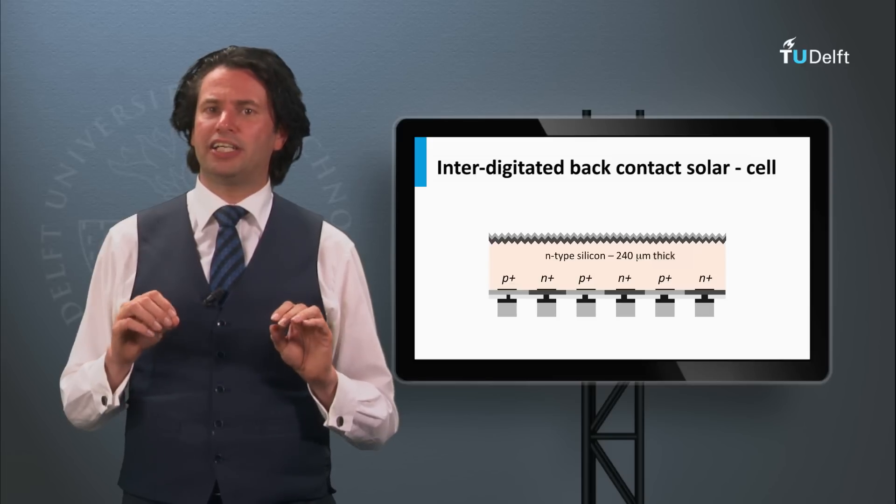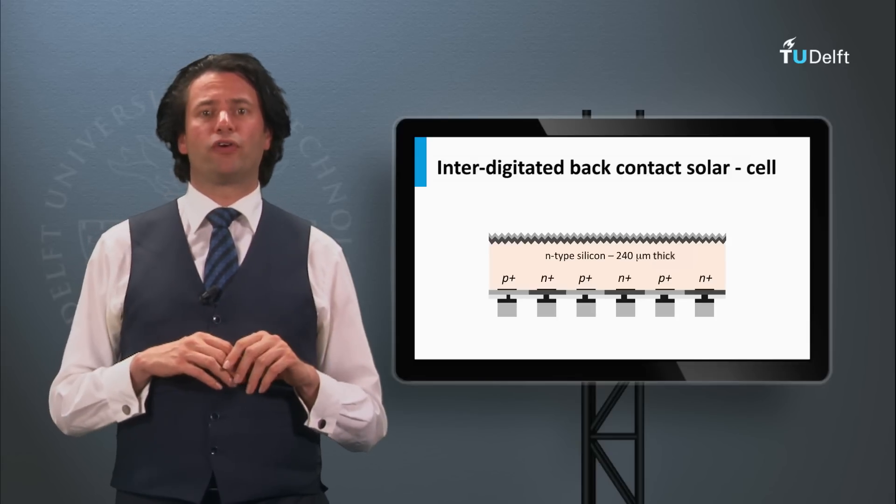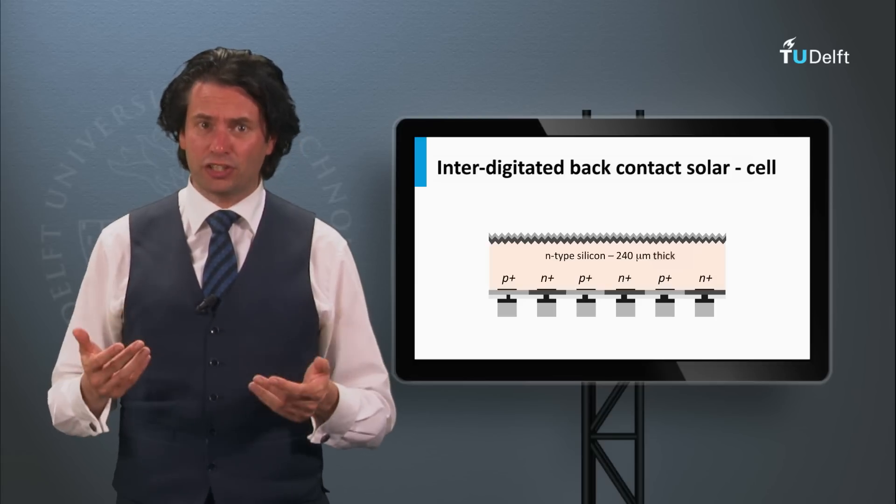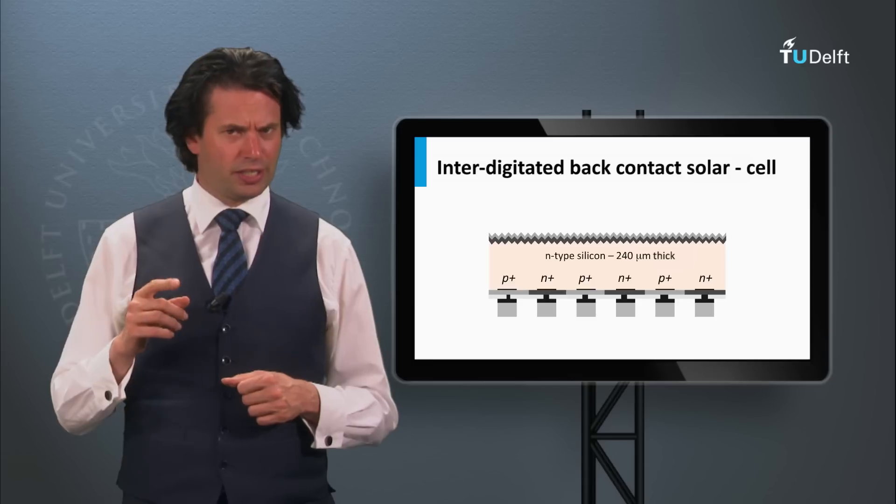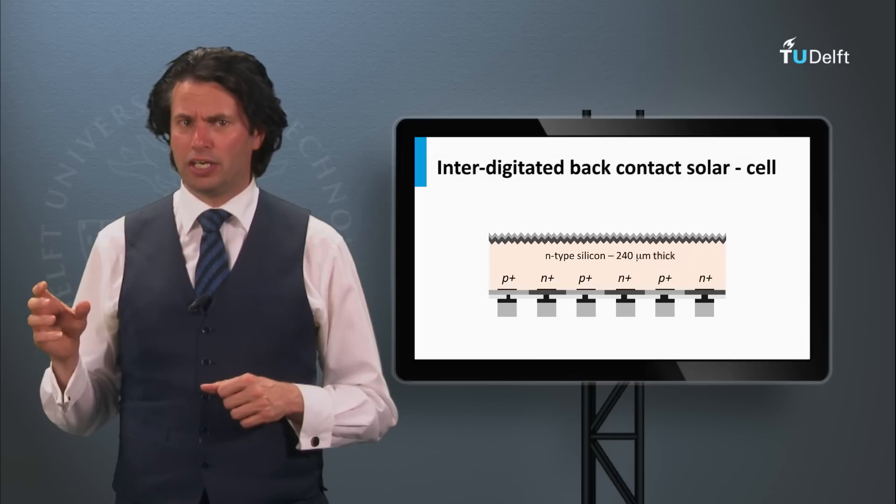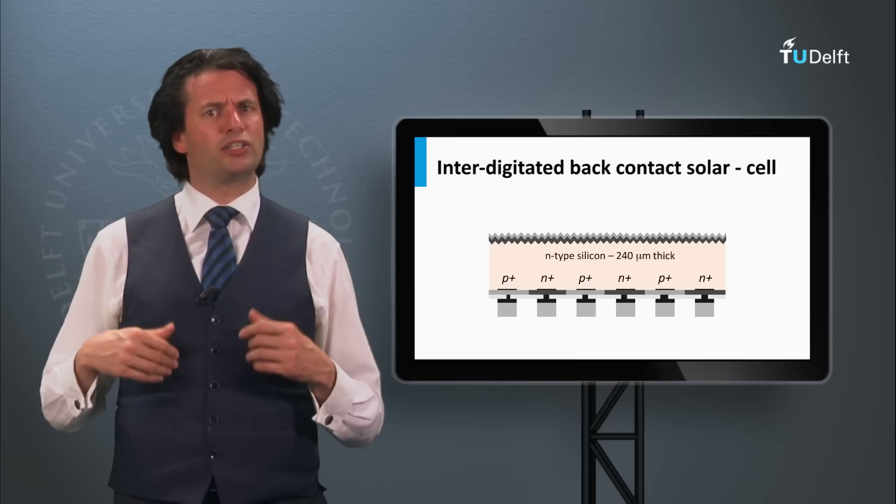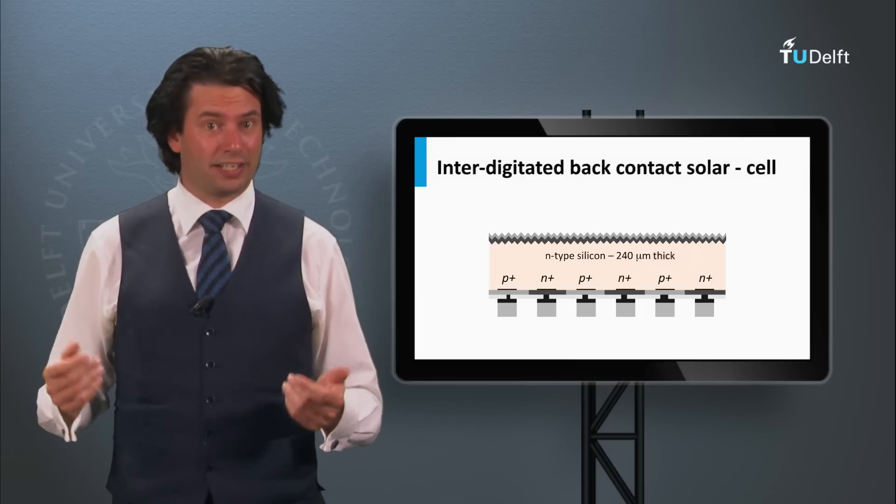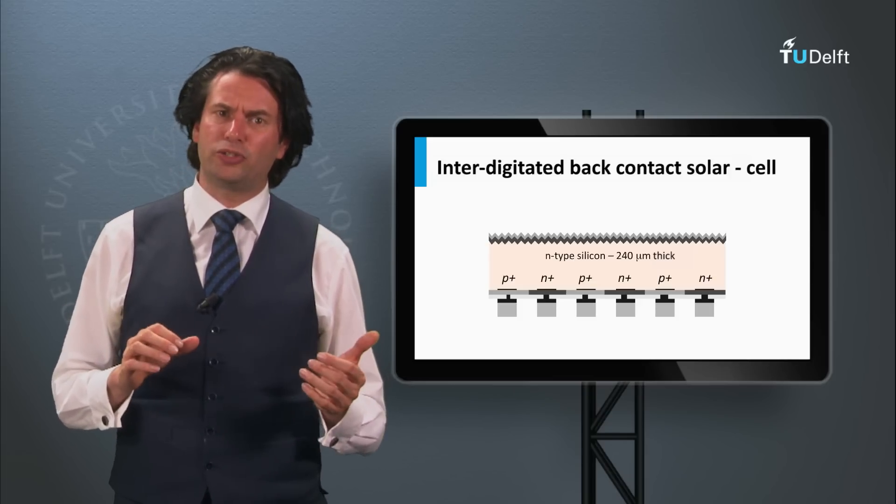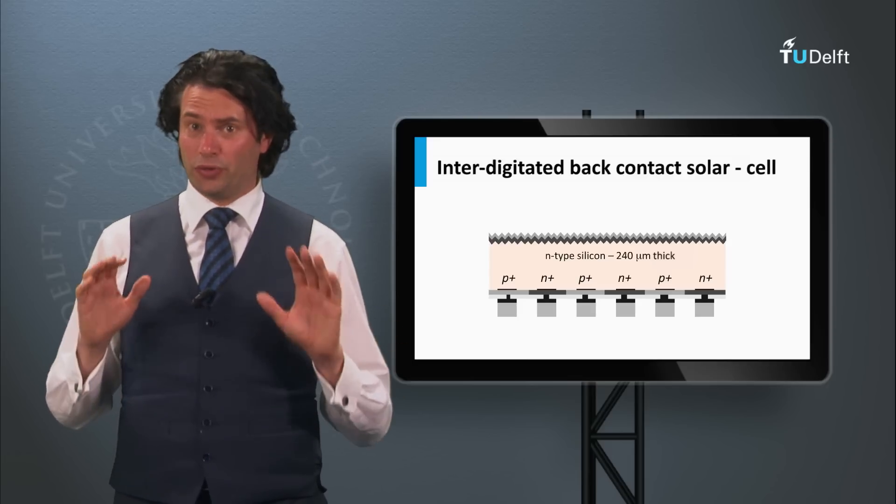An advantage of these interdigitated concepts is that you are able to use monocrystalline float zone N-type wafers. Why is that interesting? The N-type wafers have some advantages above P-type wafers. First, the N-type wafers do not suffer from light-induced degradation. In P-type wafers simultaneously boron and oxygen are present, which under light exposure start to make complexes that act like defects. The light-induced degradation causes a reduction of the power output with 2-3% after the first week of installation.